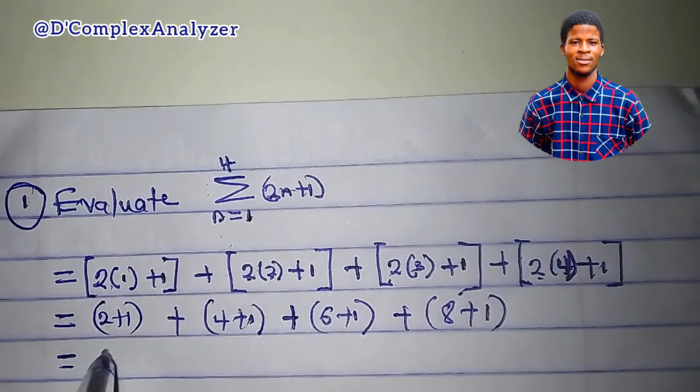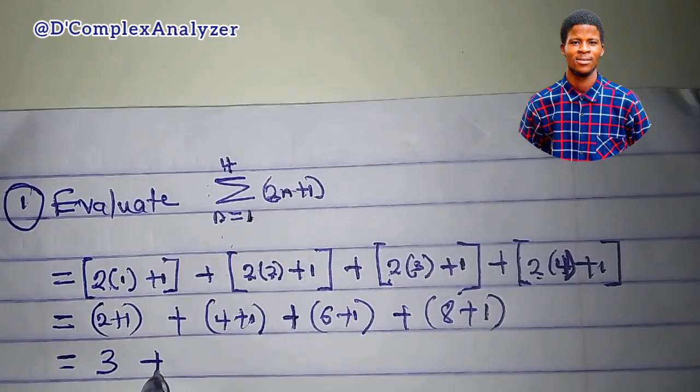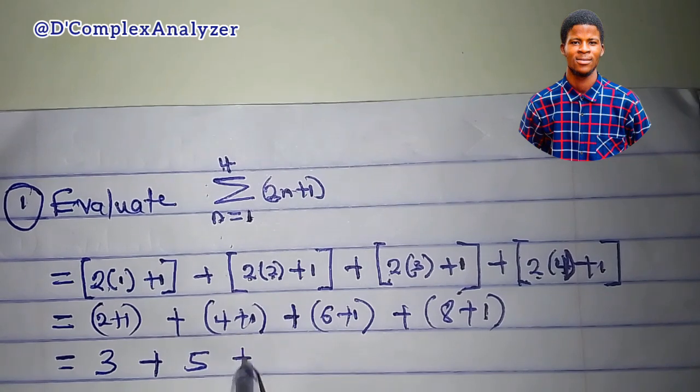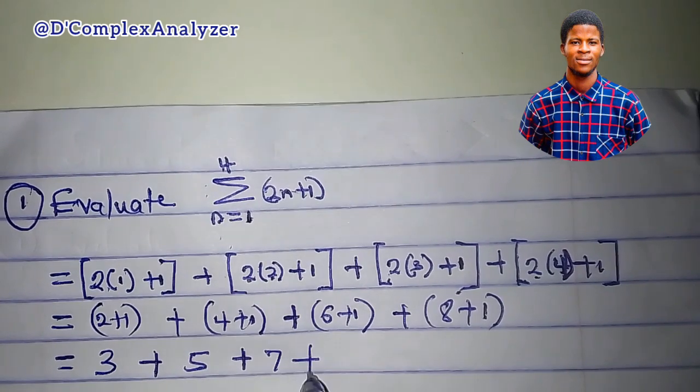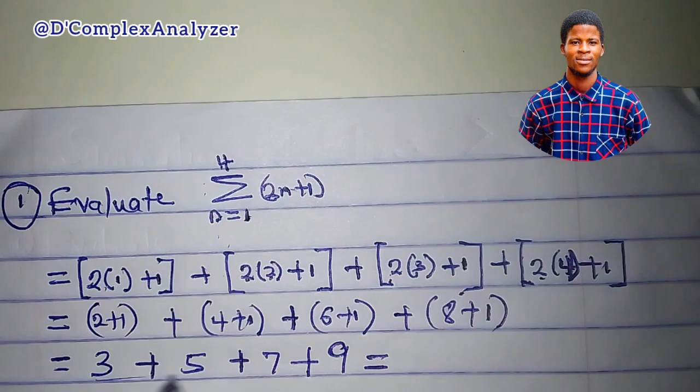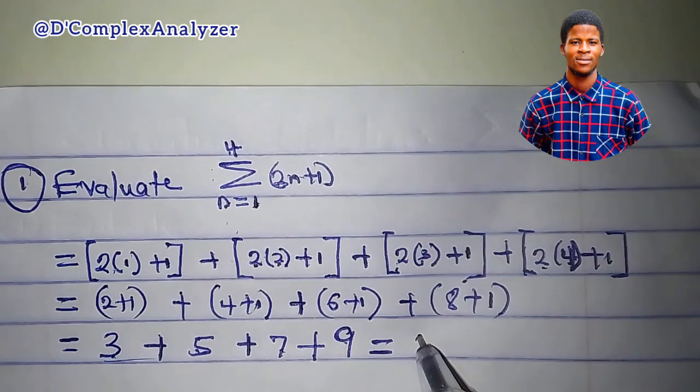2 plus 1 is 3, 4 plus 1 is 5, 6 plus 1 is 7, 8 plus 1 is 9. So, what is this sum equal to? It's equal to 24.